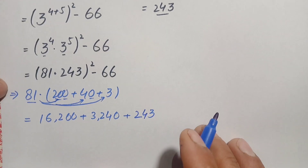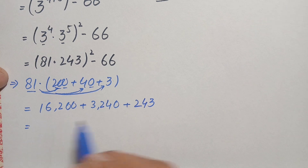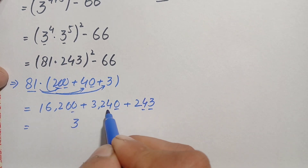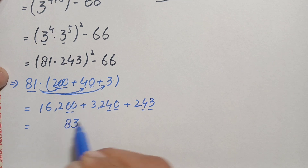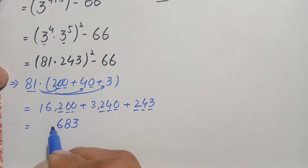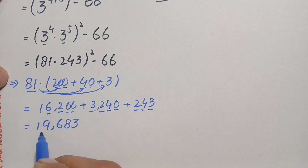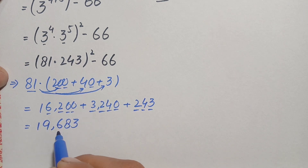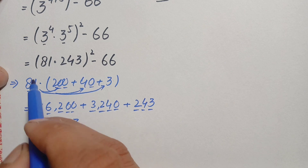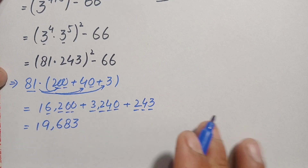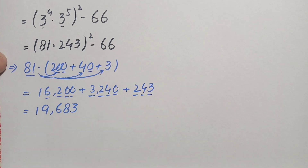Now let us add up these three numbers: 16,200 plus 3,240 plus 243. Adding gives us 19,683. So the value of the product 81 times 243 is 19,683. We replace this number with this value.